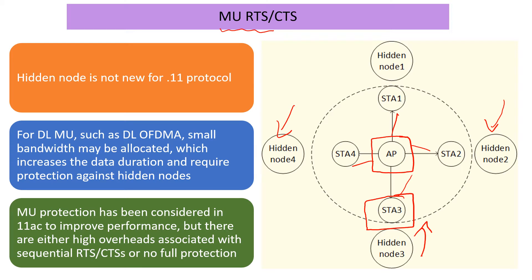What can the AP do to avoid potential collisions with hidden node transmissions? The simpler idea would be to send RTS/CTS for each of the stations involved in the MU transmissions, but that defeats the efficiency of multi-user transmissions — which is the main goal captured in the 'high efficiency WLAN' moniker for 11AX. So how do we solve the problem while retaining efficiency? Therein comes MU RTS.